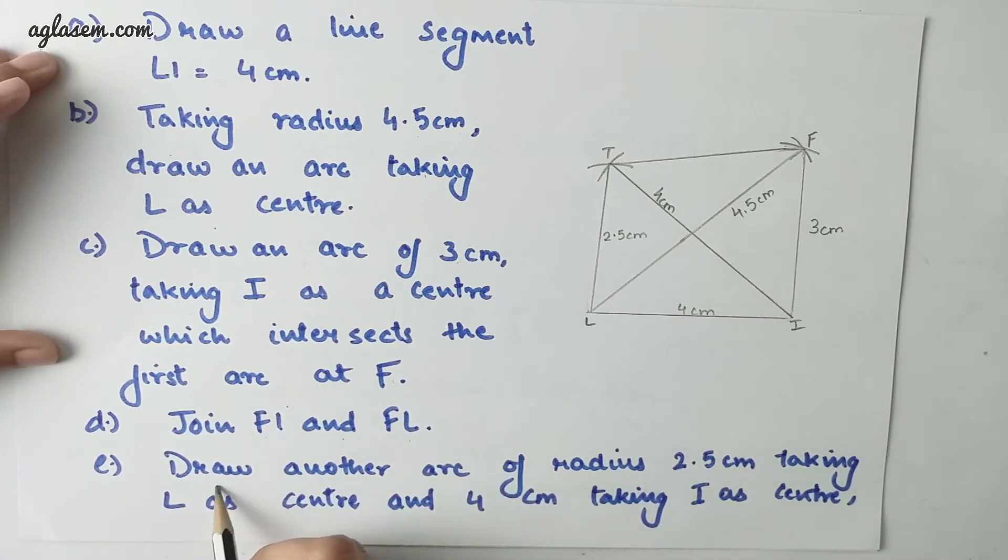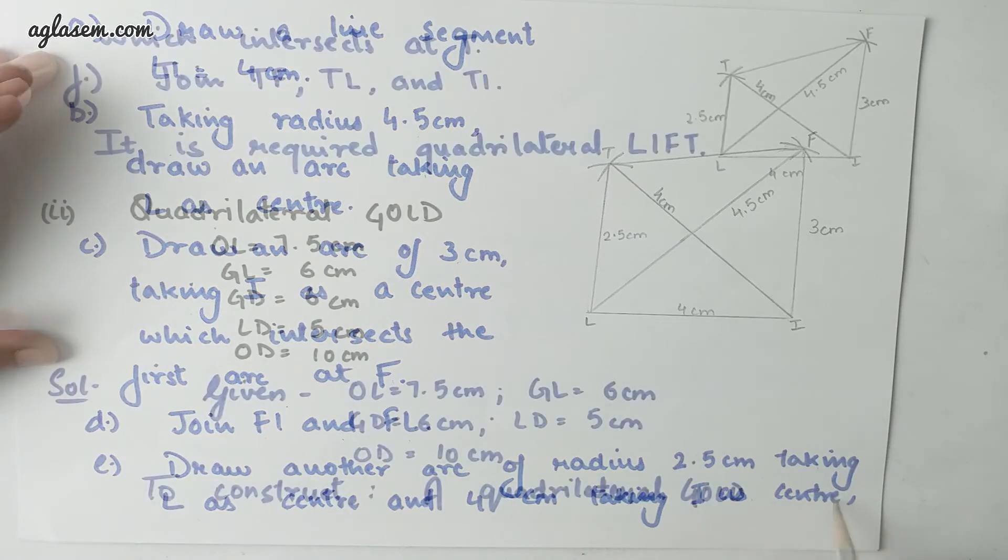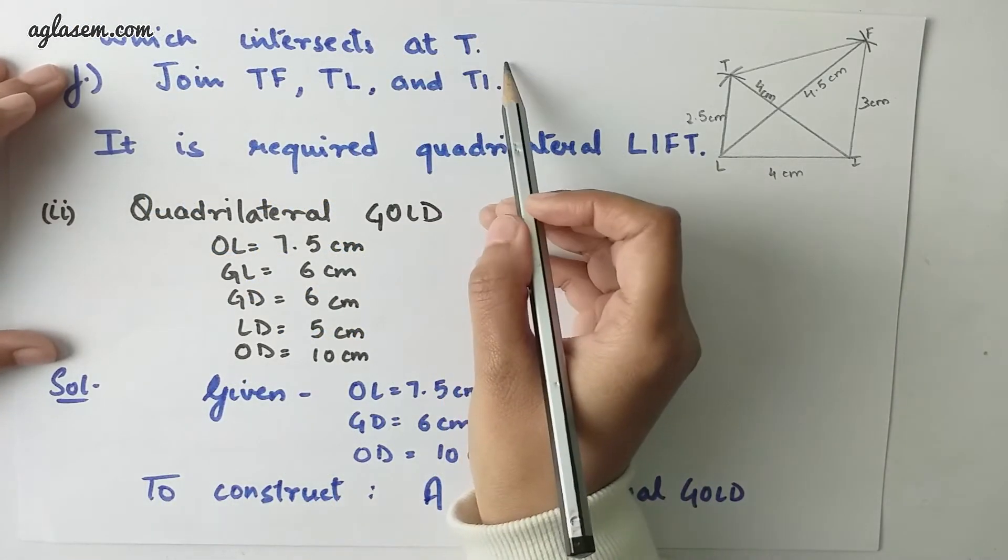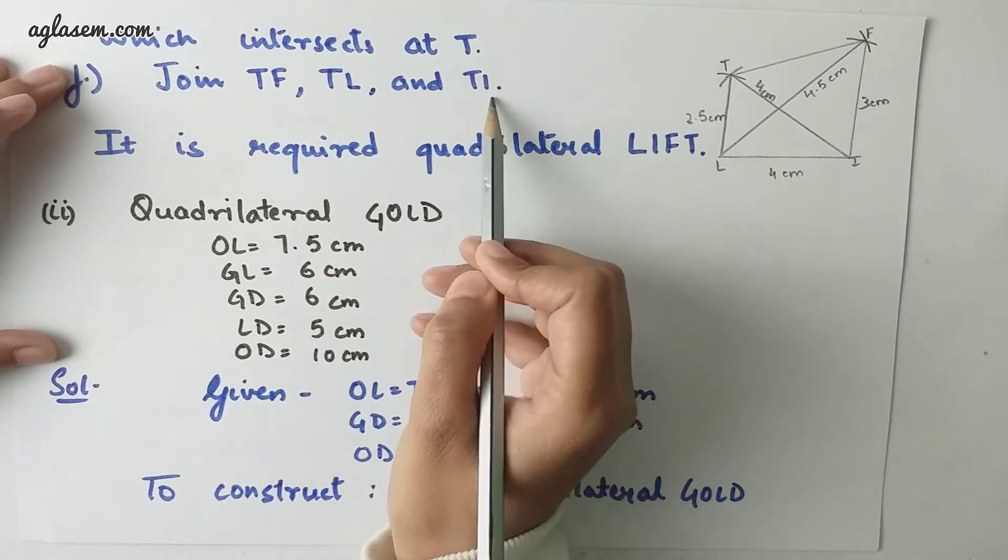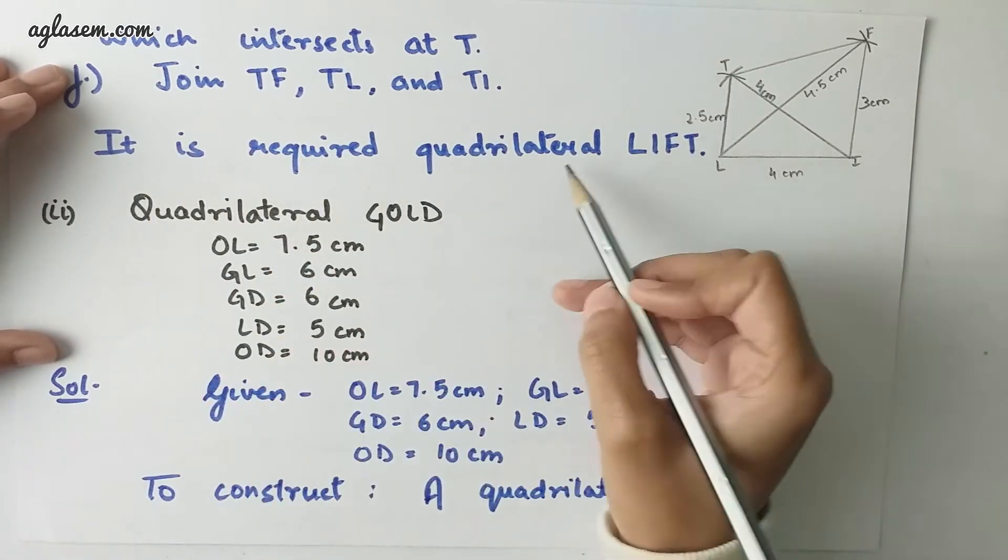Now, draw another arc of radius 2.5 cm taking L as center and 4 cm taking I as center which intersects at T. Join TF, TL and TI. So, it is required quadrilateral LIFT.